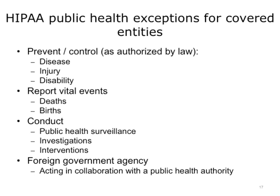The exceptions HIPAA provides to covered entities to disclose PHI to public health agencies include the prevention and control of diseases, injuries, or disabilities. However, the covered entity must ensure that the agency is authorized by federal, state, or local law to collect the information. The covered entity may also report vital events such as deaths and births to a public health agency authorized to receive such information. They may disclose PHI to public health agencies authorized to conduct public health surveillance, epidemiological investigations, and interventions. Finally, the covered entity can disclose PHI to a foreign government agency acting in collaboration with a public health authority, as may be the case in an outbreak of a contagious disease.